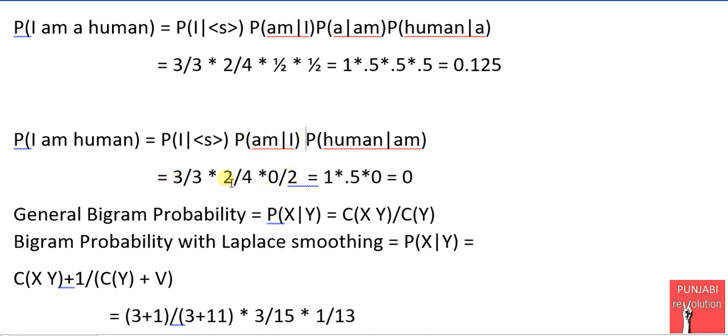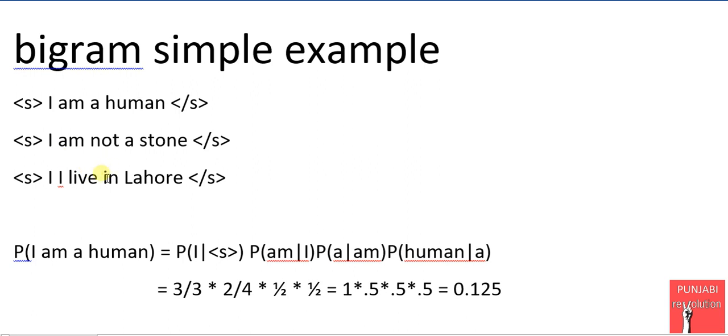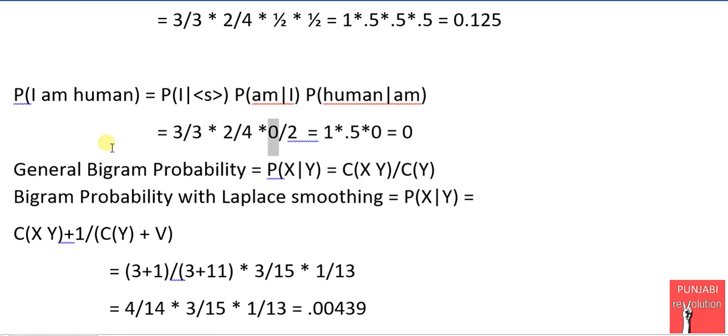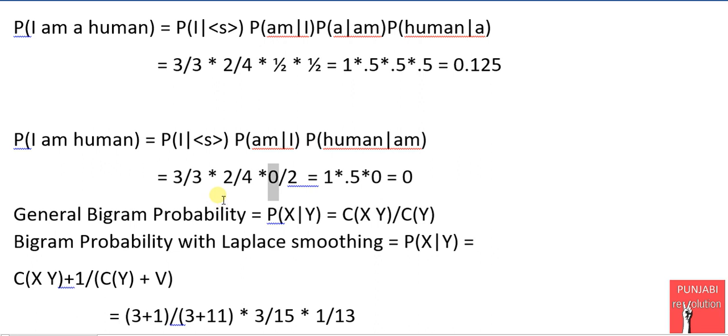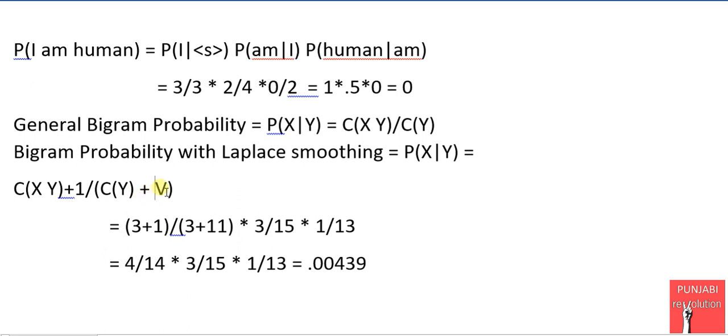So it will become 4, 3 and 1. Since we are adding 1 to all the bigrams, it means we are actually doubling the overall vocabulary. Suppose if there are total thousand words and we are adding 1 to all the bigrams, we are actually almost doubling the probability. So to normalize that issue, we will add V to all the denominators. So V stands here for vocabulary. So the actual formula becomes...